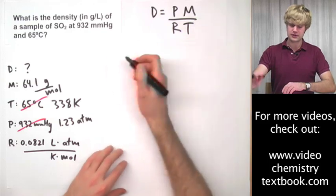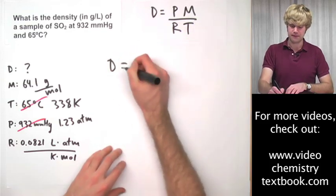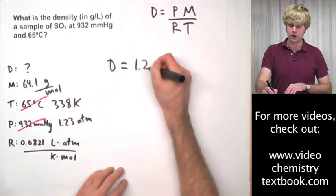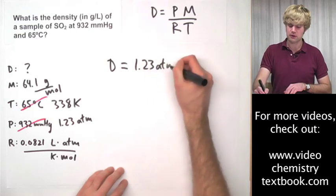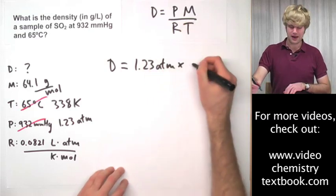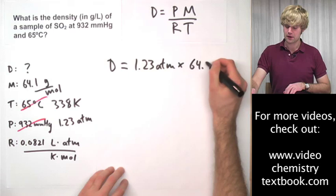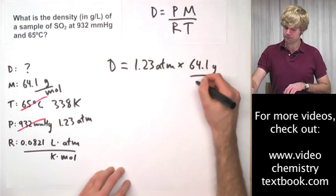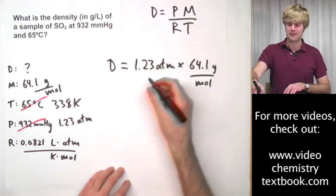So take this equation. Density equals pressure, 1.23 ATMs, times molar mass, 64.1 grams per mole. That's the top of the fraction.